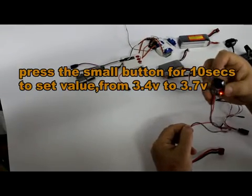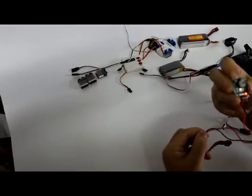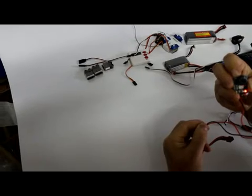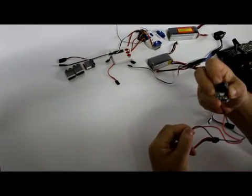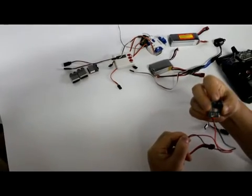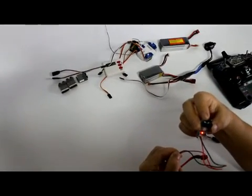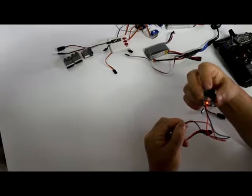Press the button only. You can set the minimum voltage from 3.7, 3.6, 3.5 to 3.4 volts.